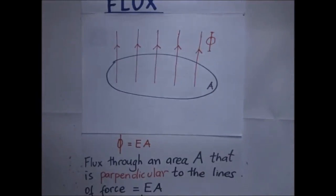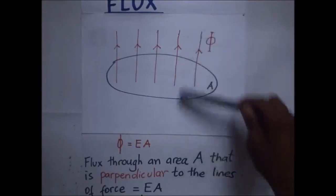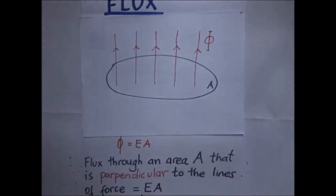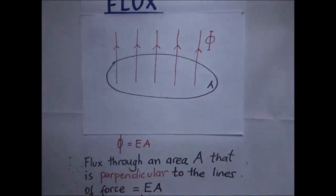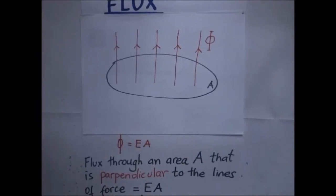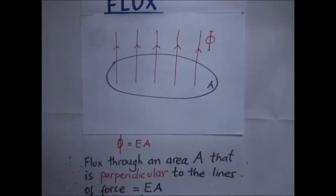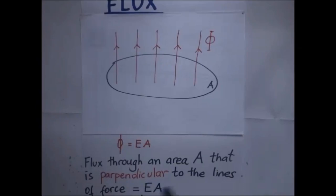Flux is simply the flow of electric field lines through the surface area A. If we want to calculate the electric flux going through the surface, flux — denoted by Φ — is going to be equal to E times A, where E is the electric field intensity of the field lines going through the area and A is the surface area. Flux through an area A perpendicular to the lines of force equals E times A.